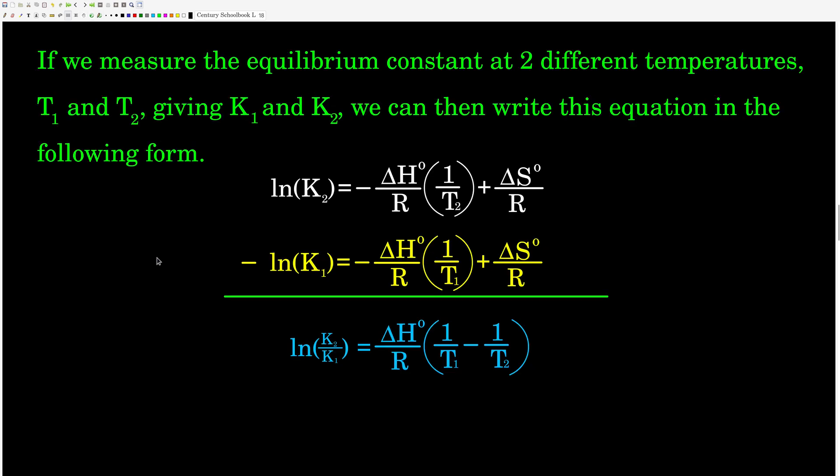Now, another useful form, sometimes in this equation, comes about if we only measure two equilibrium constants at two different temperatures, right? So underlying this, we know that the equilibrium constant changes with the temperature. And so if we measure the equilibrium constant at two temperatures, T1 and T2, giving us K1 and K2, then we can write the equation for both of those equilibrium constants and temperatures.